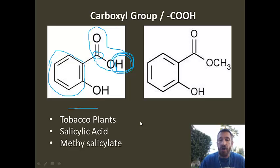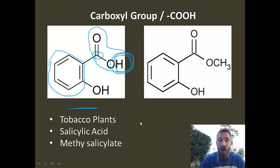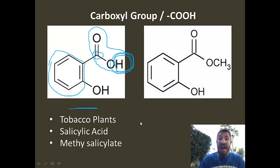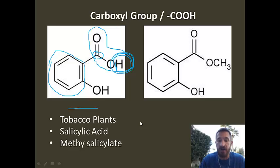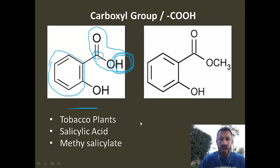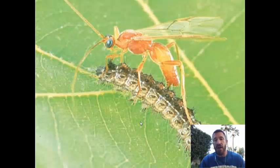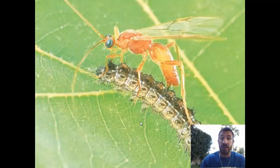Another cool thing that tobacco plants do: if they're infected by caterpillars — which are like a parasite that can infect and kill tobacco plants — the plant actually produces a chemical that is a precursor, and this in turn attracts wasps, which will kill the caterpillars and help the tobacco plant continue living. So even on something like a tobacco plant, acids and bases can have a big effect. There's a wasp that has been attracted to the tobacco plant, killing the caterpillar.